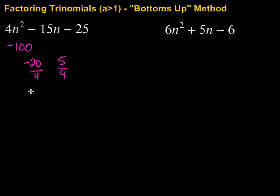Simplify, so divide by 4 on the top and the bottom here. So negative 5 over 1. And then on this side we have 5 over 4. Can't do any simplification there. Then we read bottoms up. So our variable is N again. So it's going to be N minus 5. And my second one is going to be 4N plus 5, reading from the bottom up.